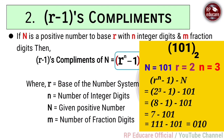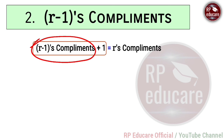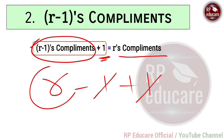Now an important relationship: if you are given the r-1's complement and want to find the r's complement, simply add 1 to the r-1's complement. The -1 and +1 cancel out, leaving r's complement. So r's complement = r-1's complement plus 1. Thank you.